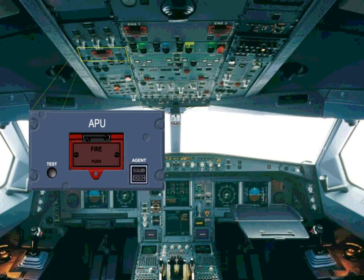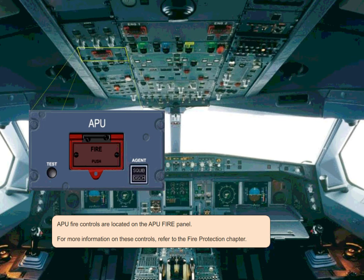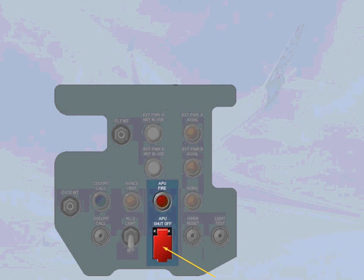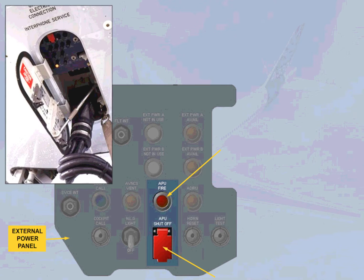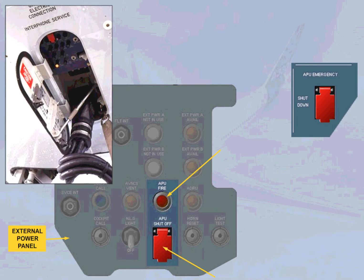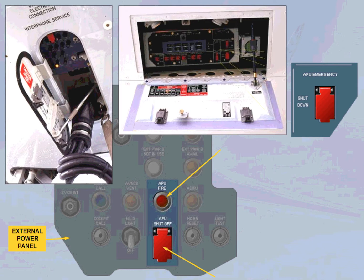This indicates that the APU bleed valve is open with bleed air pressure available. APU fire controls are located on the APU fire panel. For more information on these controls, refer to the fire protection chapter. There are also an APU shut-off push-button and an associated APU fire warning light located on the external power panel. There is also an APU emergency shutdown push-button located on the refuel/defuel panel.